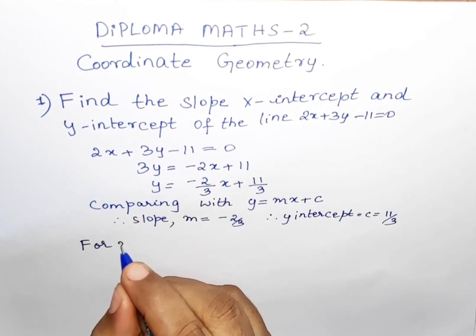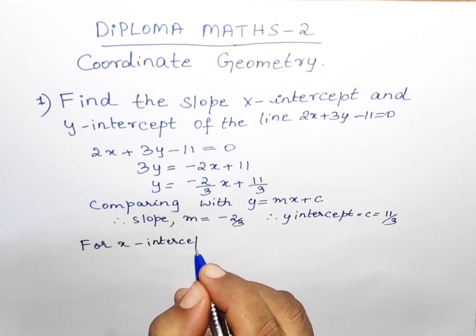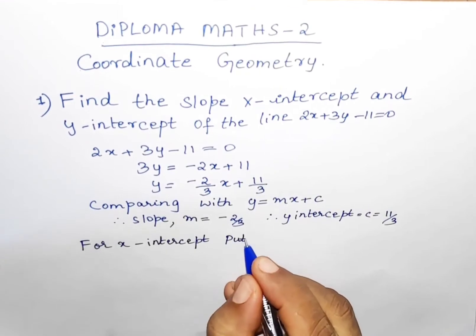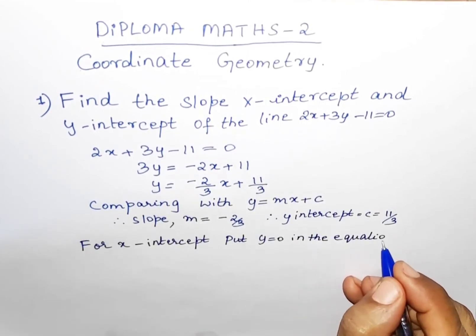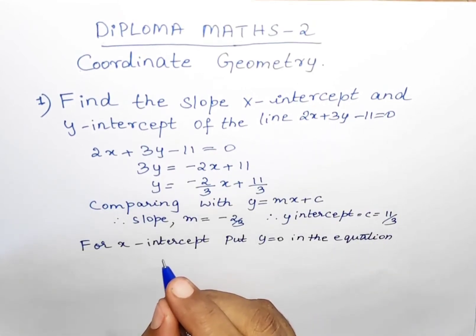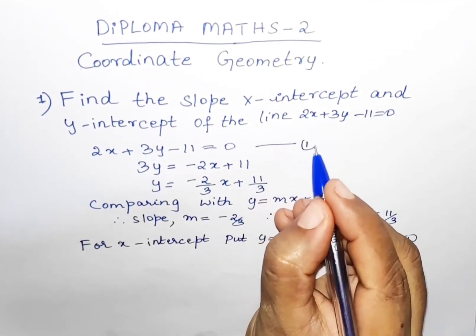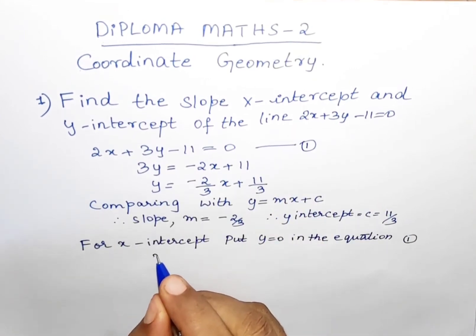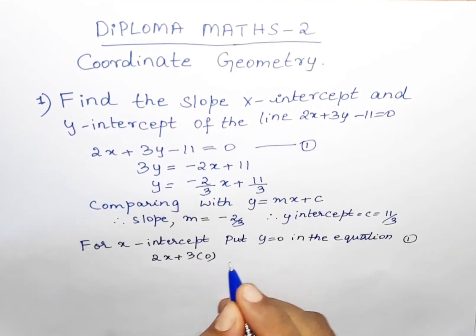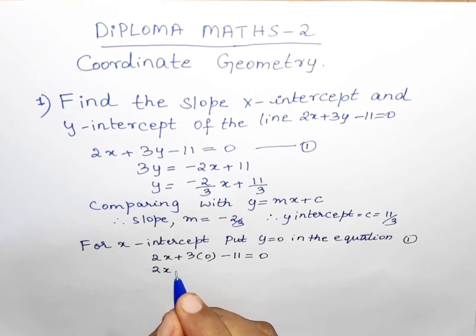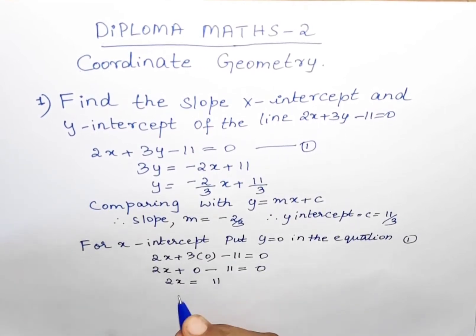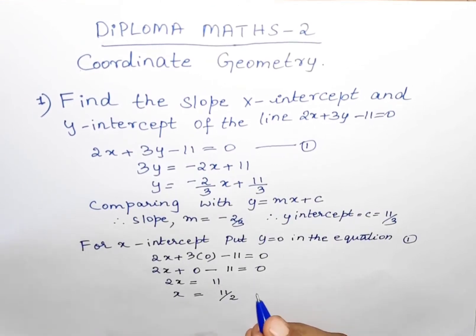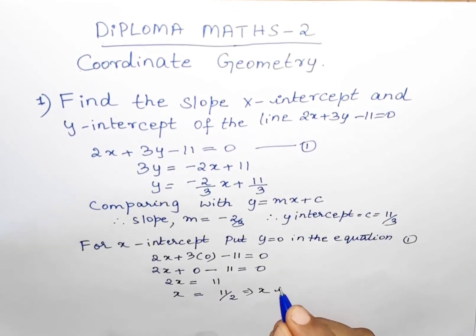Now we have to find the x-intercept. To find the x-intercept, put y = 0 in equation 1, that is 2x + 3y - 11 = 0. This becomes 2x + 3(0) - 11 = 0, so 2x - 11 = 0, giving 2x = 11. Therefore x = 11/2. The x-intercept is 11/2.